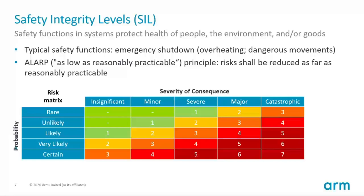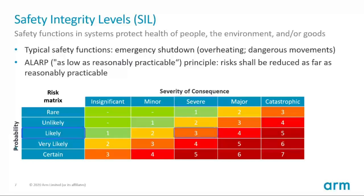Each standard is slightly different, but basically you need to analyze the risk of your system. One of our customers builds window lifters for the car industry. One of the risks is that you can cut a finger off with a window lifter — for example when kids play at the backseat and their parent closes a window. While this might be categorized as likely, it does not kill the kid, it's just severe, so you would qualify that risk as 3.